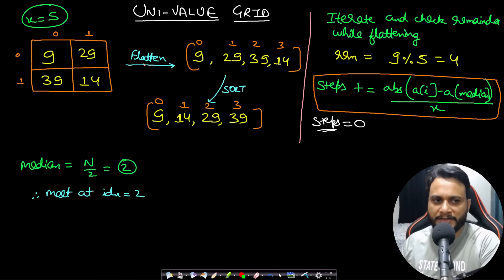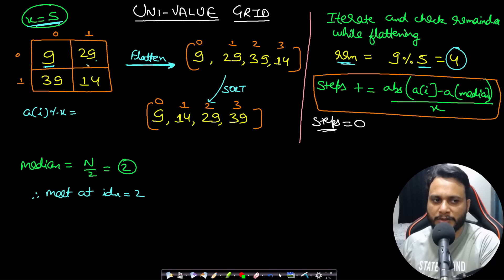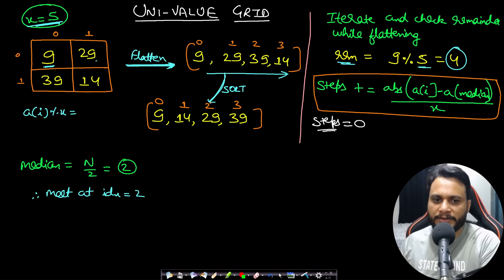Given a grid, flatten it into a single-dimensional array. While flattening, check the mod value of each element against the remainder — if any element's mod X differs, return minus one immediately. After flattening, sort the array to arrange values on a number line. The median is found at index N divided by two, where N is the total number of elements. Sorting MN items takes O(MN log MN) complexity.